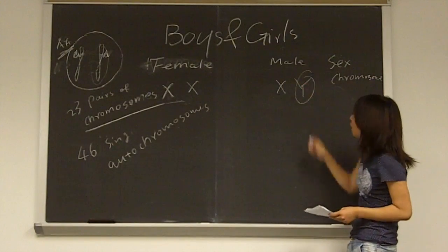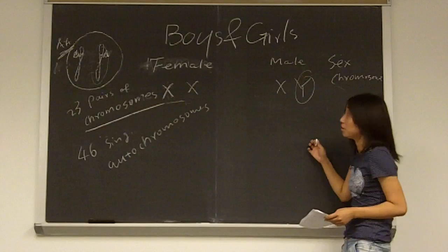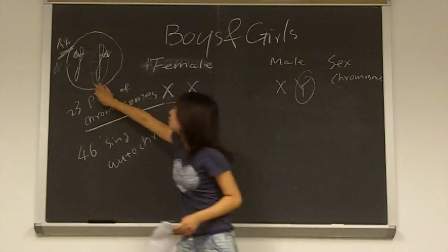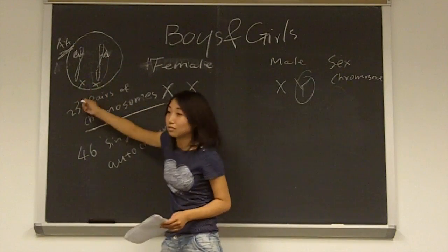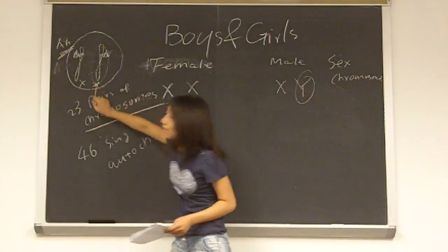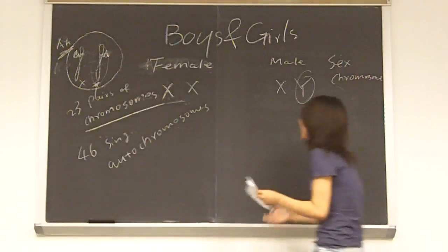So if you got one Y chromosome, you will be male. If you get XX, you are a girl. If you are XY, you are a boy.